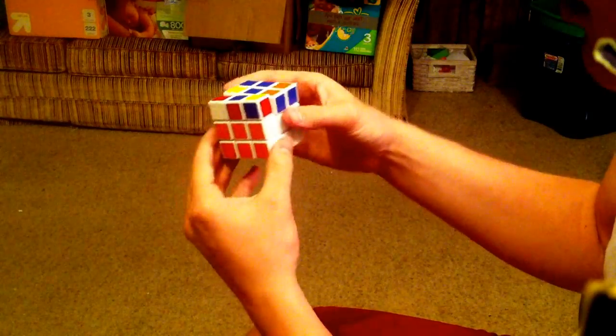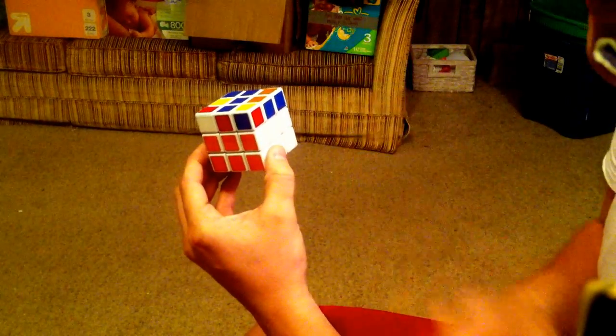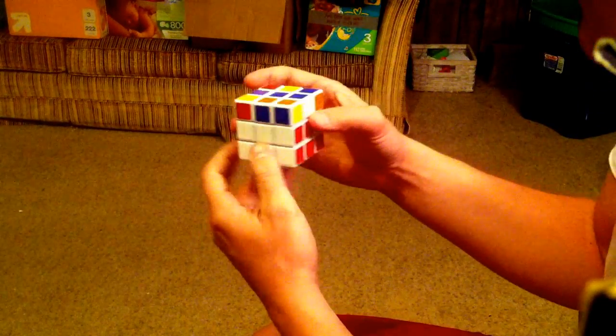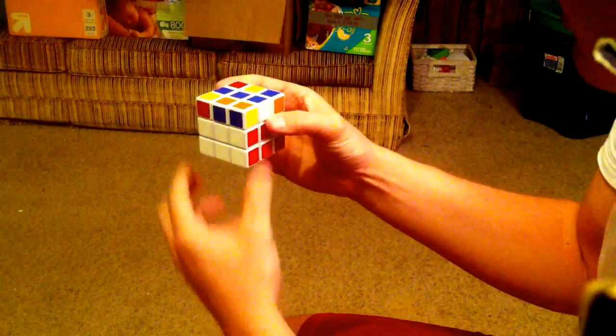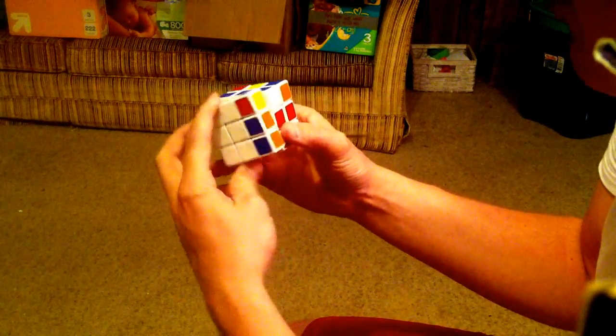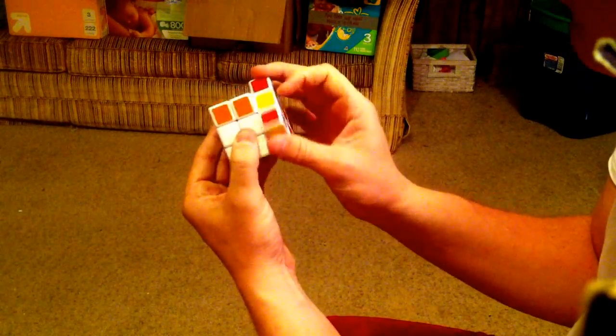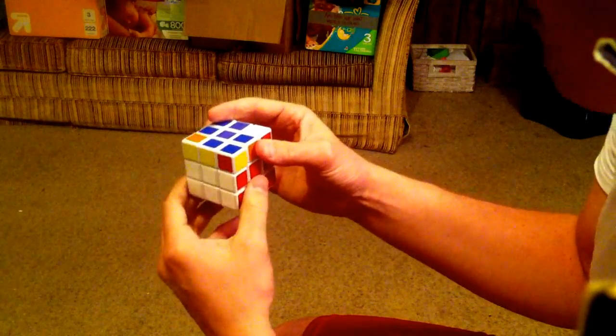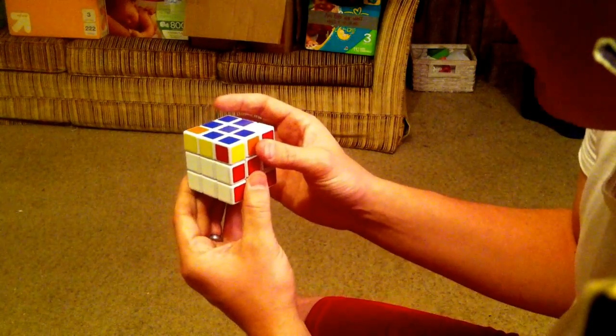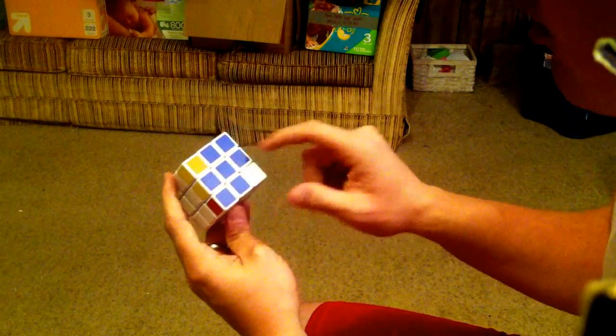That would be bad. So, if I did F, R, U, R prime, U prime, F prime, that would be bad. So, I'm going to hold it like this, and then I'm going to do the algorithm again. So, F, R, U, R prime, U prime, F prime. And that will get me the blue cross.